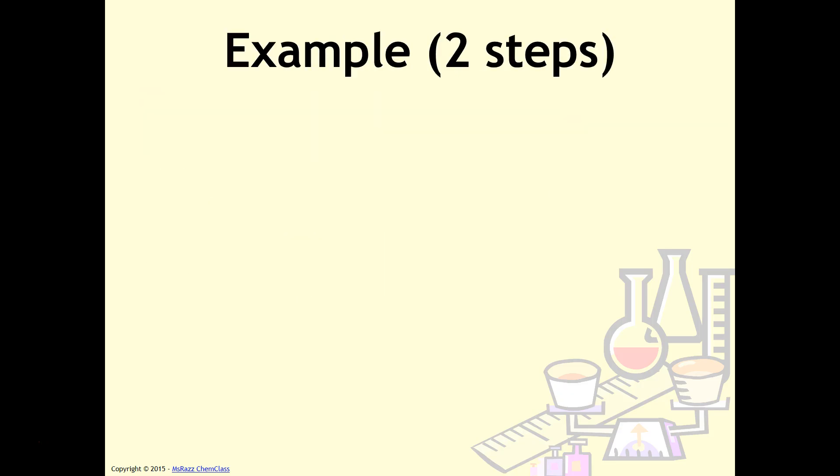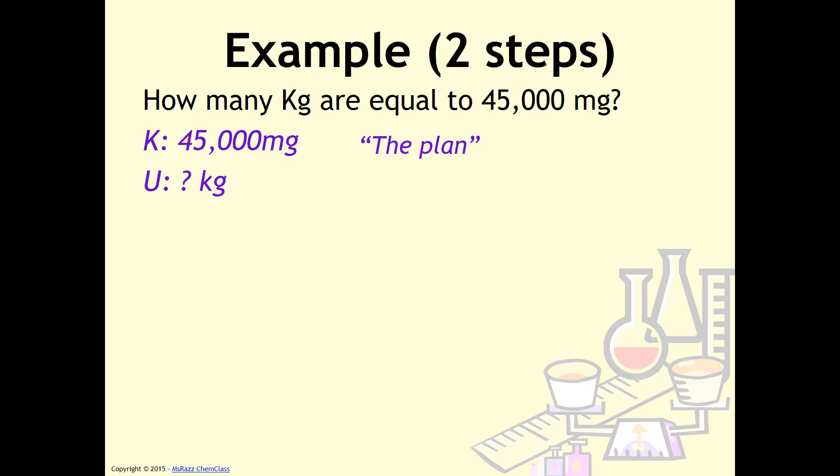This is a two-step example now. So we've only been doing one steps or one conversion factors. Now it's time to go on to the two-step problems. For example, how many kilograms are equal to 45,000 milligrams? The known is 45,000 milligrams. The unknown is how many kilograms. The plan, as you might expect, would be to go from milligrams into kilograms. But if you use the previous slide, notice there is no direct conversion factor that goes directly from milligrams into kilograms. And so that is why whenever you are going from one prefix to another prefix, you will have to go through the base unit. So you will go, for example, from milligrams into grams, and then from grams into kilograms. And then just like I did before, I would write those conversion factors needed to do that. So for example, a thousand milligrams equals one gram, and a thousand grams equals one kilogram.